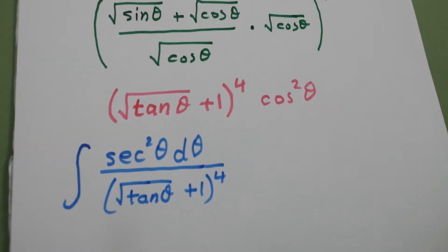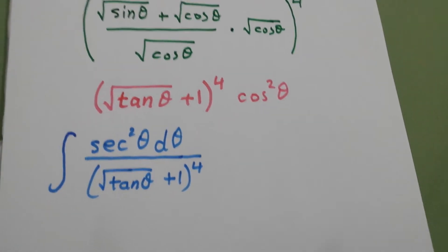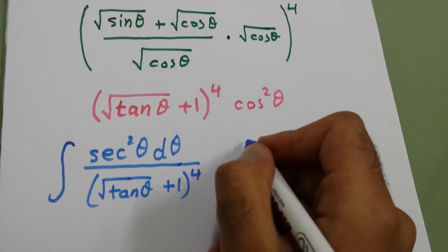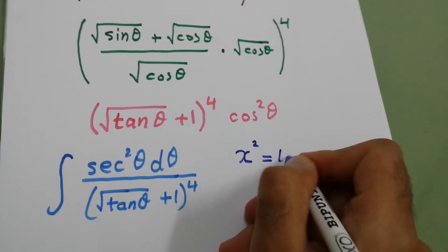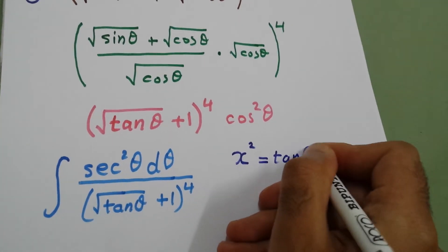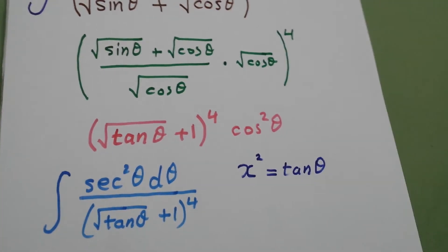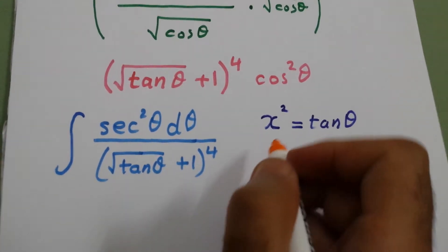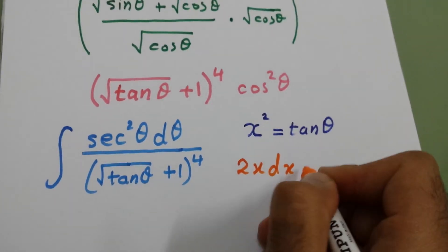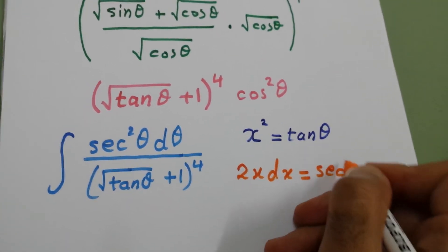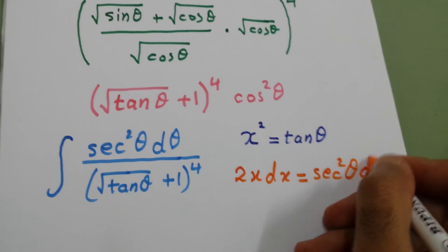Now we will do a substitution, easy substitution, which is x square equals tan theta. So 2x dx will be secant square theta d theta.